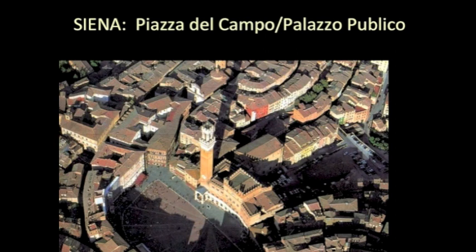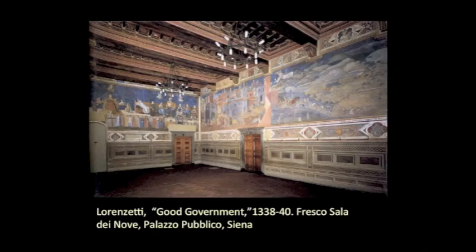Notice the tower of the town hall, the Palazzo Público — one of those little spindly towers not dissimilar to San Gimignano. Inside the town hall we have one of the most interesting painting cycles you will ever see: the Good Government and Bad Government cycle by the Lorenzetti brothers, Ambrogio and Pietro Lorenzetti.